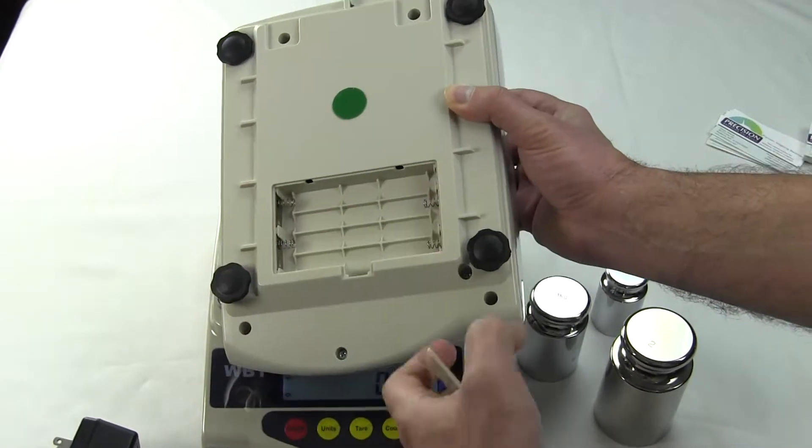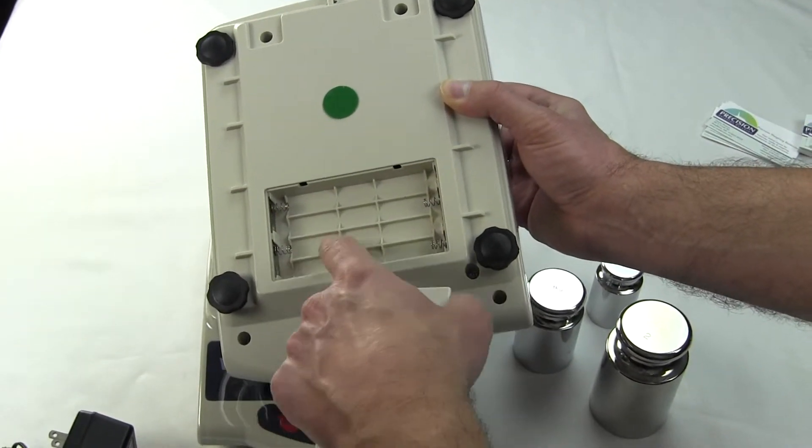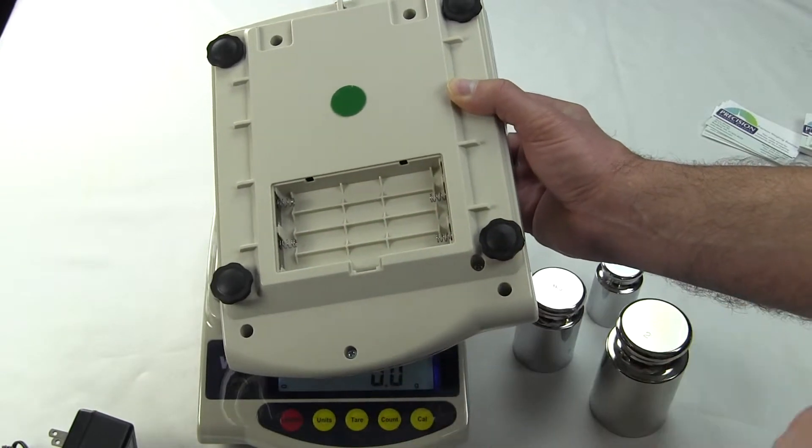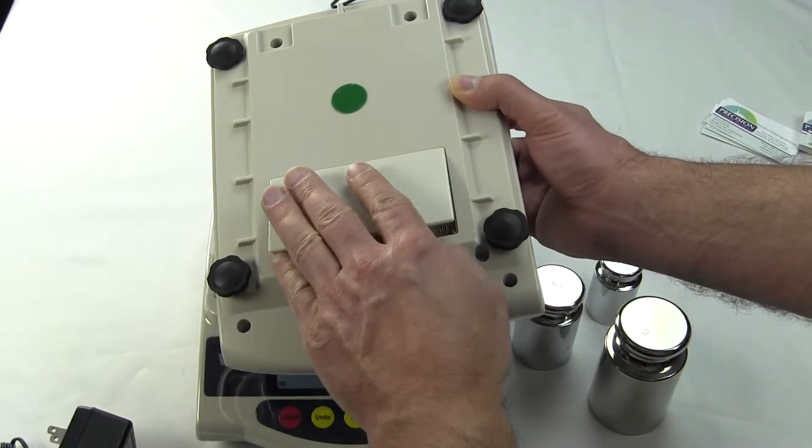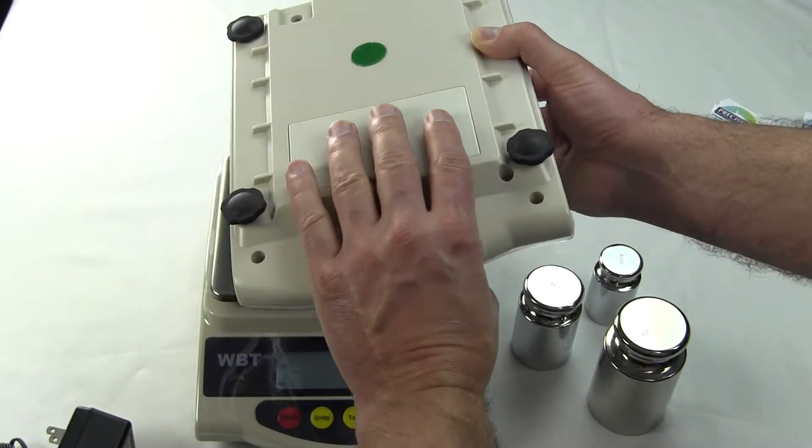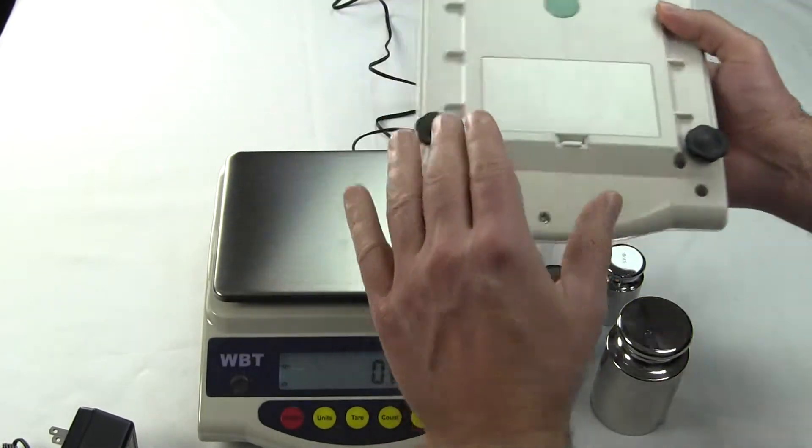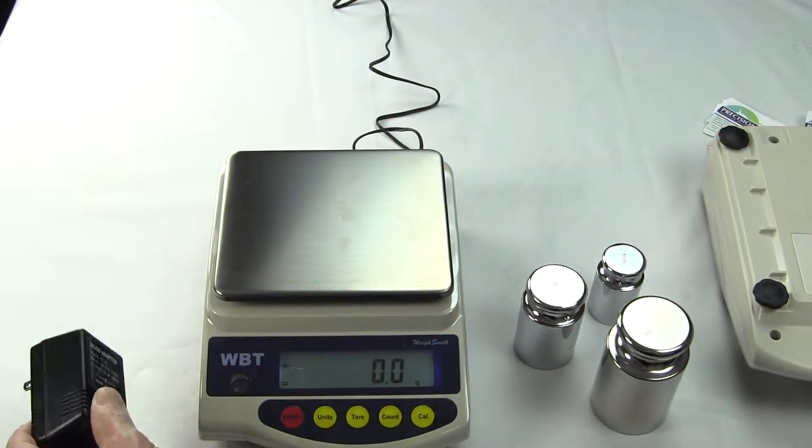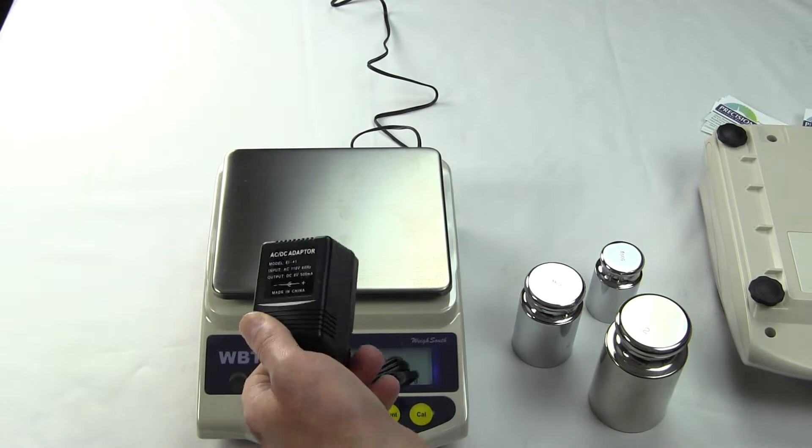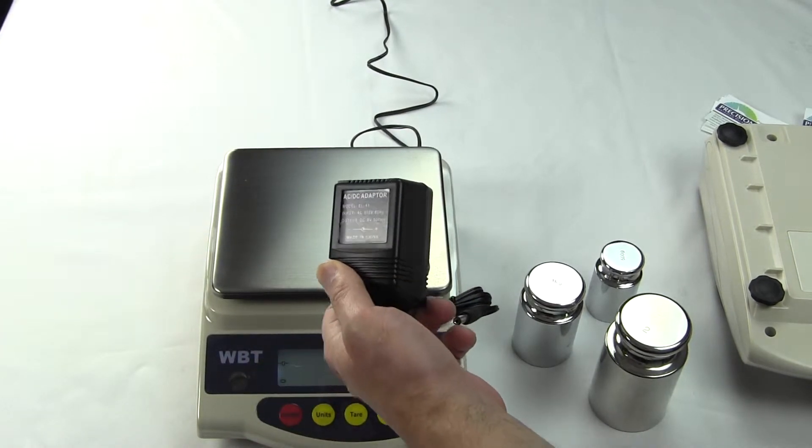On the bottom of the scale we have a battery compartment here and you can see it takes eight double A batteries. The batteries are not included but the AC adapter is. The scale does come with the AC adapter as standard equipment so you do not have to pay extra for the AC adapter.